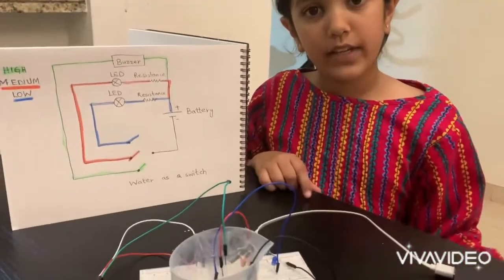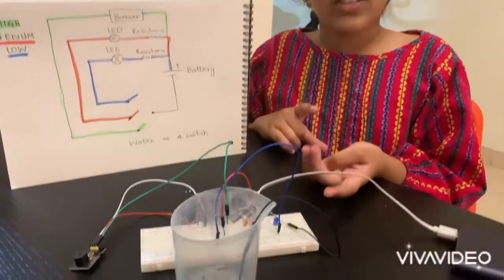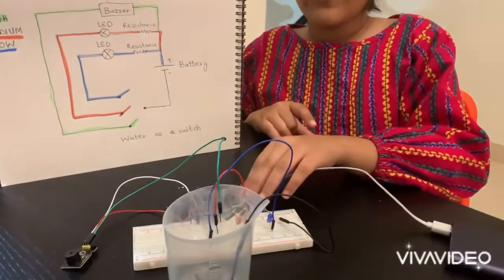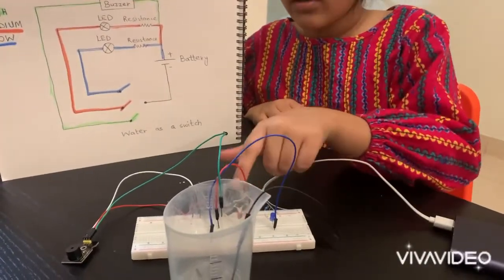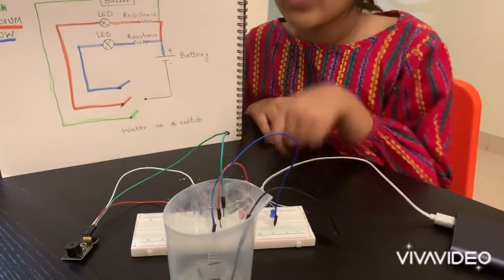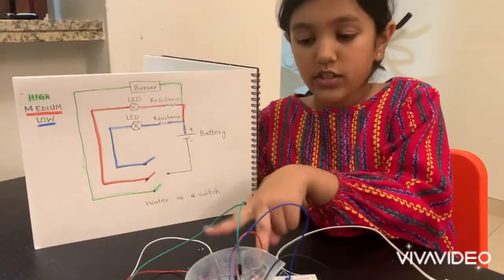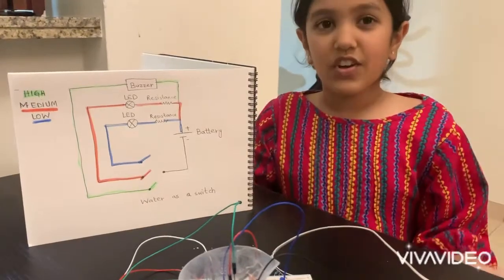The circuit for the blue LED is complete, so the blue LED turns on. And the same, when we pour until the second and third level, these two circuits also become complete and they turn on.